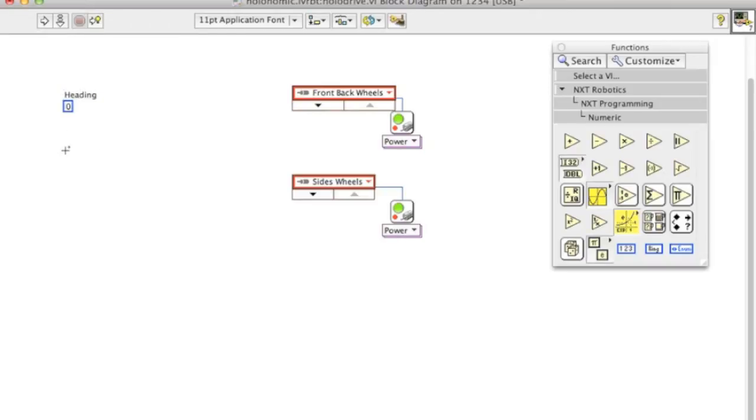Now we need to take that heading that we're going to give our program, that's going to be one of the inputs, and then the other one is going to be the power that we want to feed to the motor. So we need to give a direction and a power. We're going to probably use a power of let's say 100 and we can start with a heading of 0.